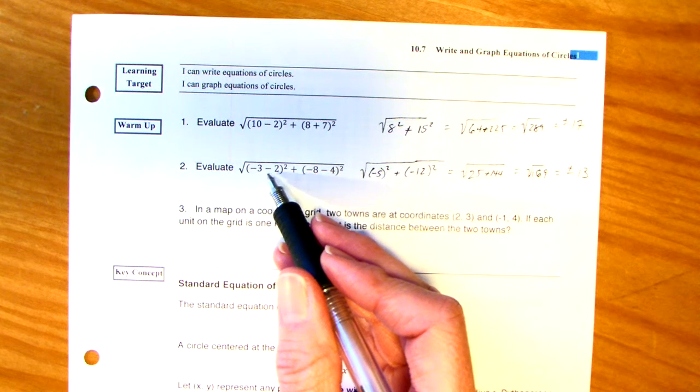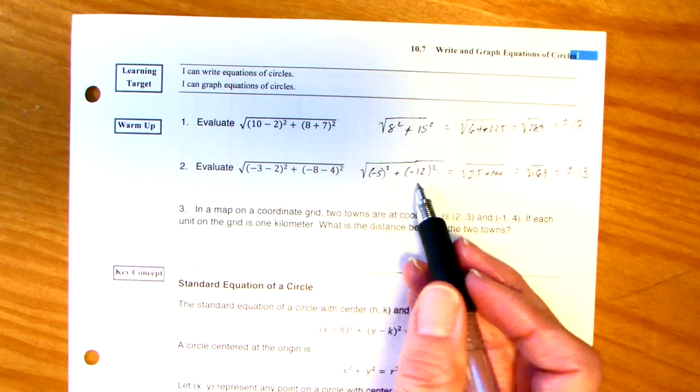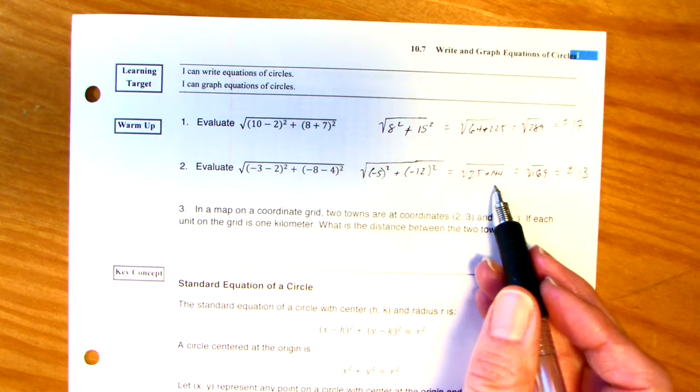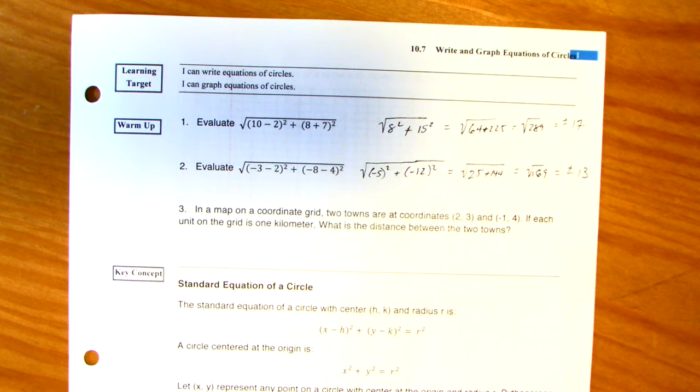Alright. Second problem. The difference between negative 3 and 2 will be negative 5 quantity squared. We have negative 12 quantity squared. Square to each one, you get 25, 144. Add them up. 169. The square root of that is plus or minus 13.